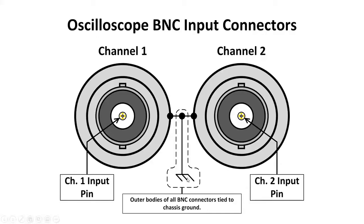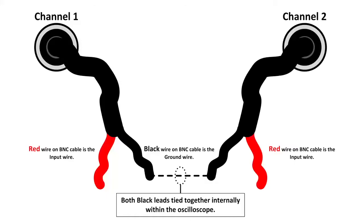Looking at it in terms of the BNC cables, a standard issue BNC cable has a red lead and a black lead. If I'm using two channels, those two black leads are tied together internally to the scope, whereas the red leads are independent for each channel.